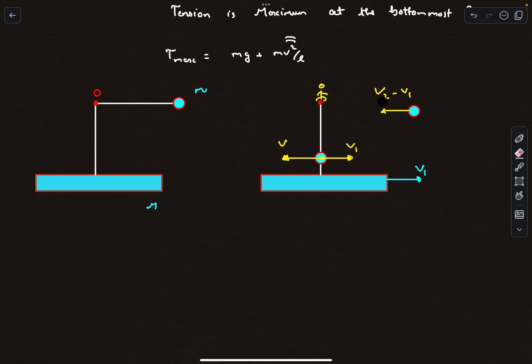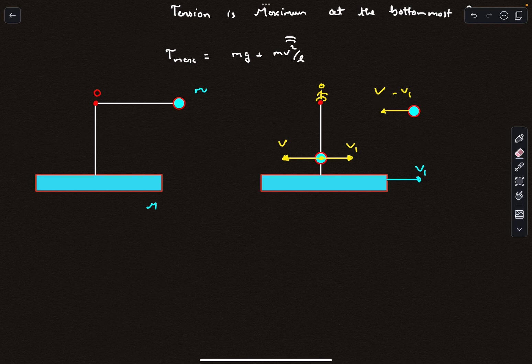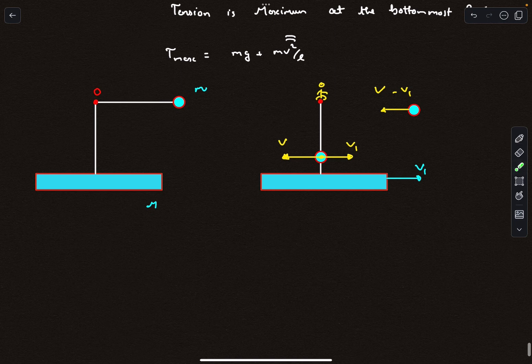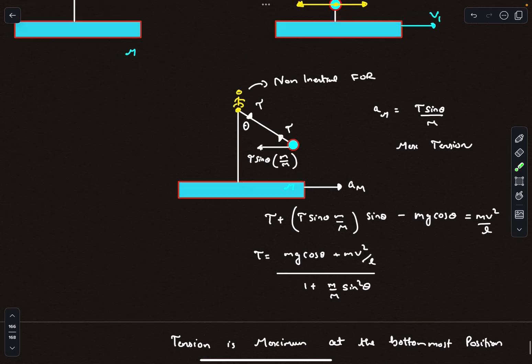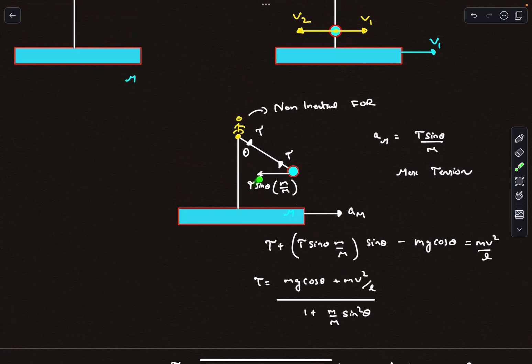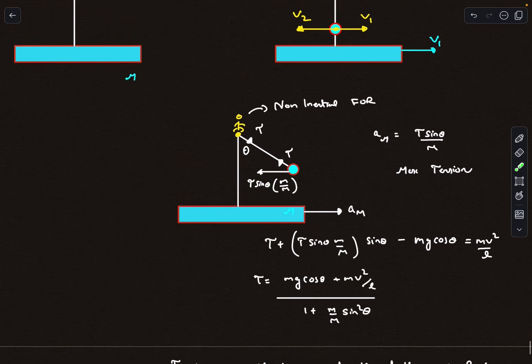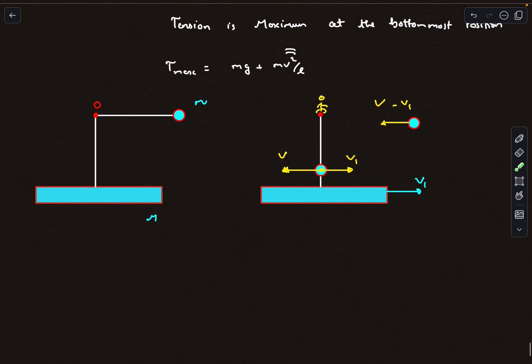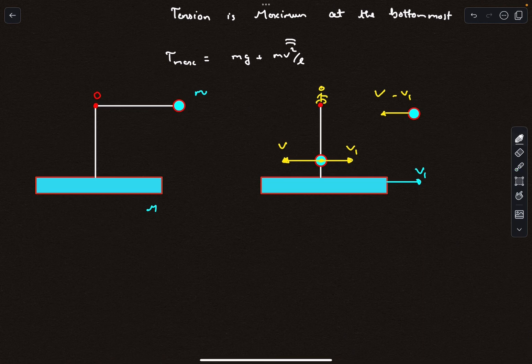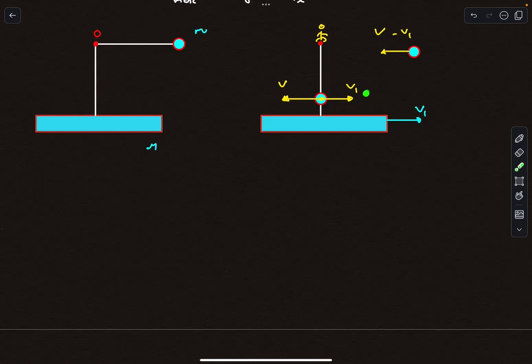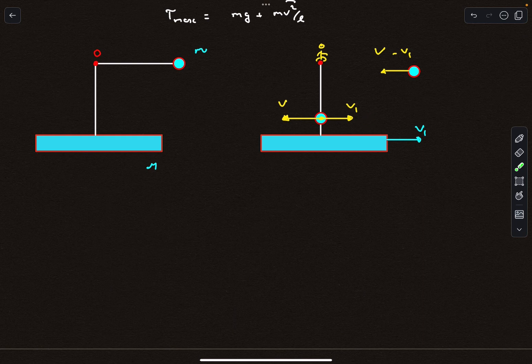We have to apply work energy theorem, and we are not going to be applying it with respect to this guy. The reason is the work due to pseudo-force will be annoying, because the force itself is a variable force. So the work done by it is going to be annoying. We are going to use the ground frame to conserve energy. The problem with the ground frame is that V1 is going to come in, and if you want to eliminate V1, you have to use momentum conservation, but we are going to use something very interesting here.